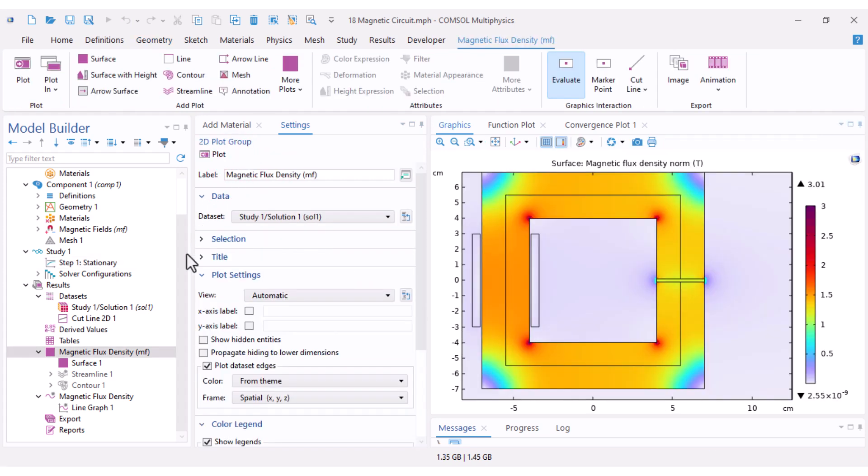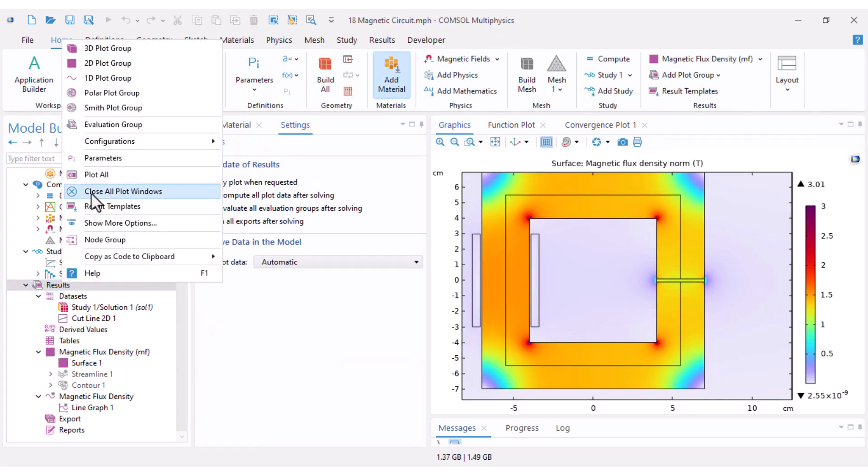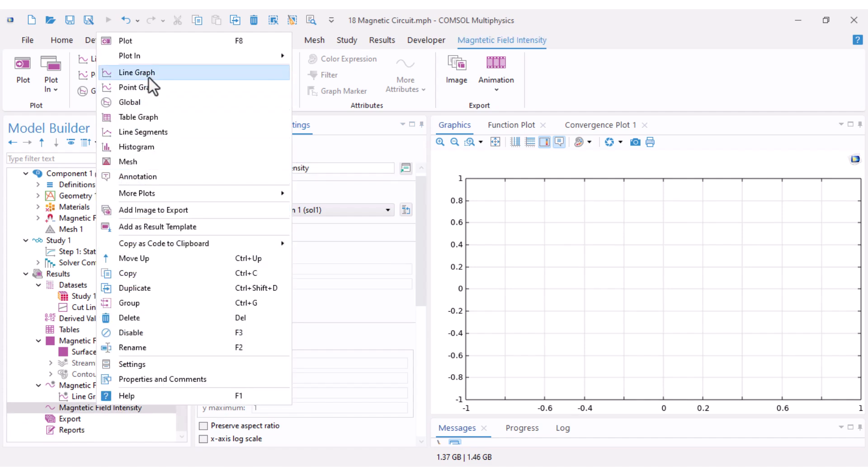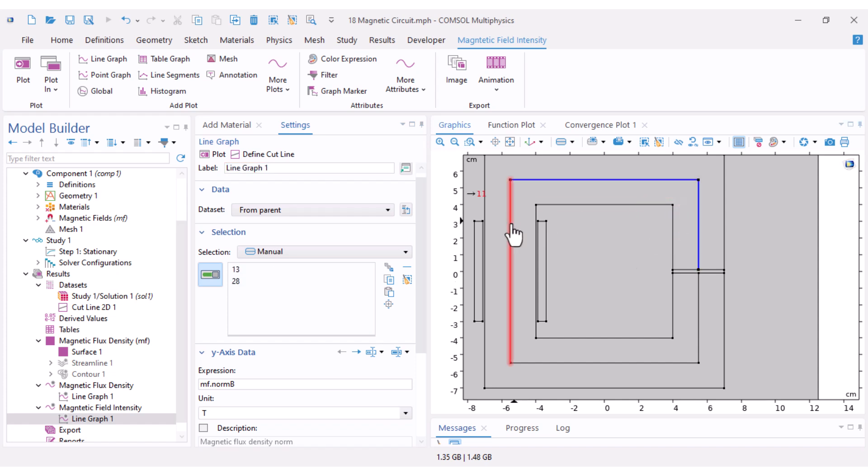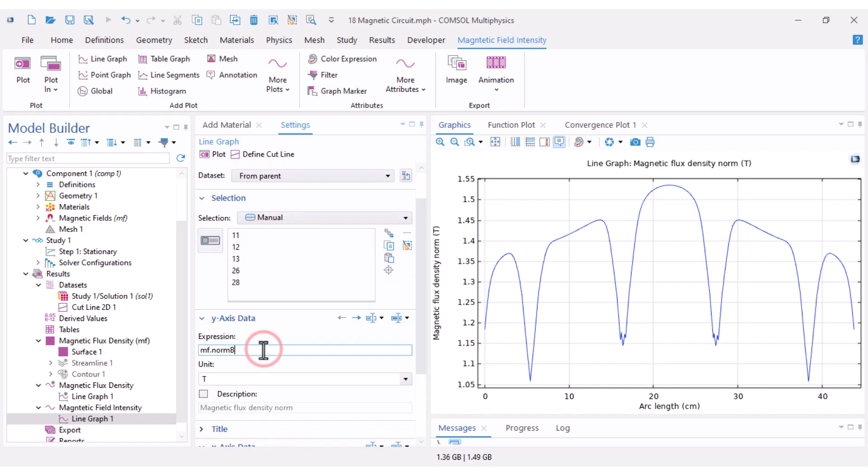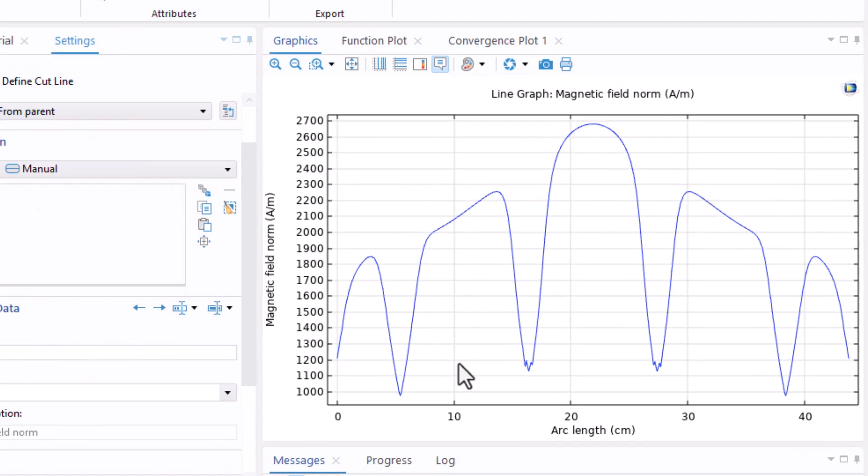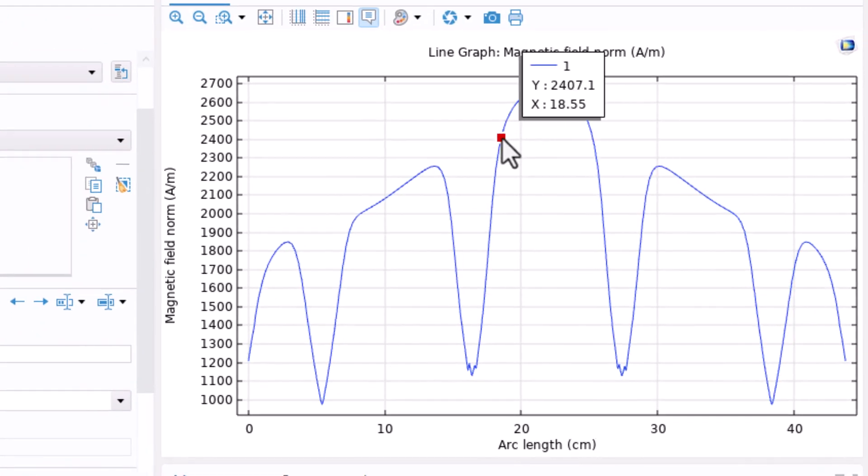Now I add another 1D plot group and rename it as magnetic field intensity. I add a line graph, and in the selection I select my magnetic path variable. I also change the norm B to norm H which is magnetic field intensity.